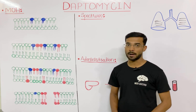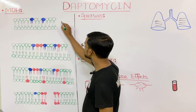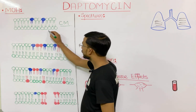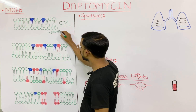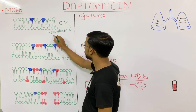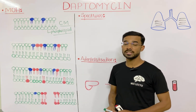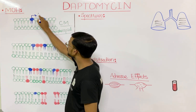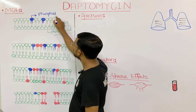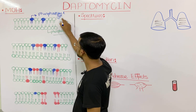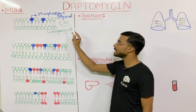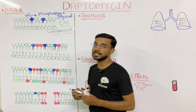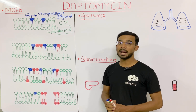The cell membrane of the bacteria has two components. The green color represents the phospholipid bilayer, and in between you will also see the phosphatidylglycerol, shown here in blue. So the two key components are phospholipid and phosphatidylglycerol.